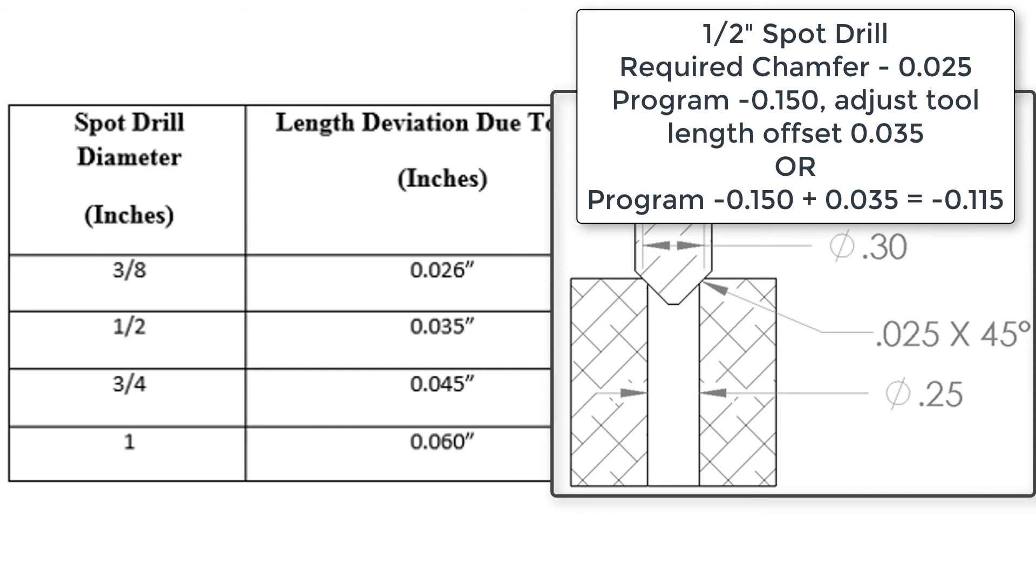If the program depth was negative 150 thou, then the height offset of the tool would need to be adjusted by the 30 thou length deviation. If the depth was adjusted instead, negative 115 thou would be programmed.